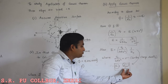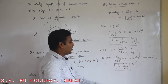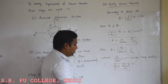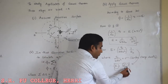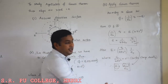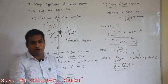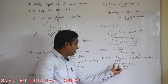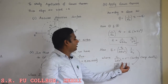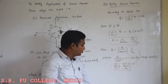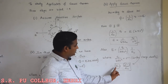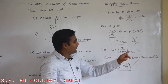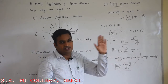Here epsilon naught is a constant for air medium or vacuum medium, with value 8.8 into 10 power minus 12. E is directly proportional to sigma, where E is the electric field and sigma is the surface charge density.